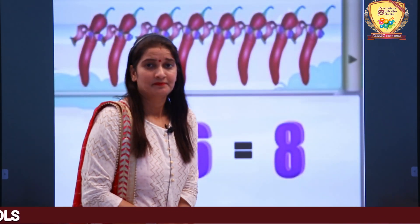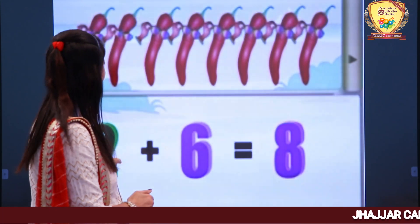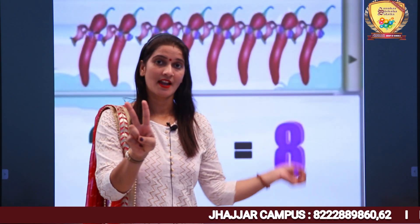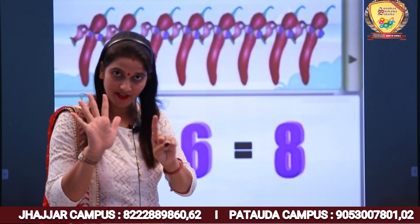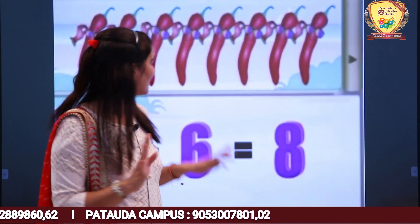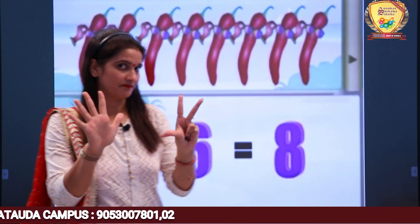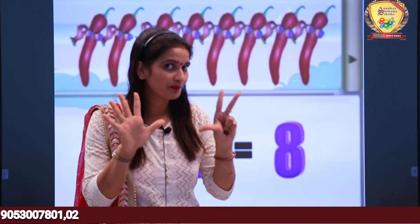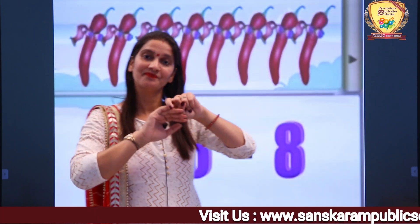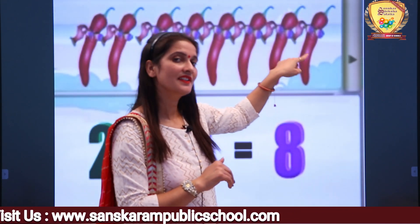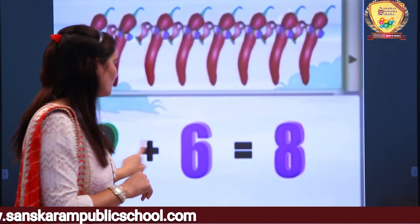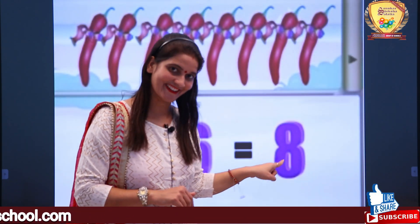Some red chilies are there. Suppose 2 chilies were there, and 6 more chilies came. How many chilies are there now? 1, 2, 3, 4, 5, 6, 7, 8. Let's check — 1, 2, 3, 4, 5, 6, 7, 8. So 2 plus 6 is equal to 8.